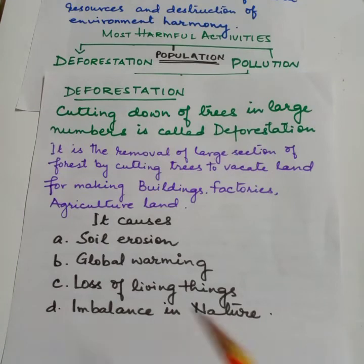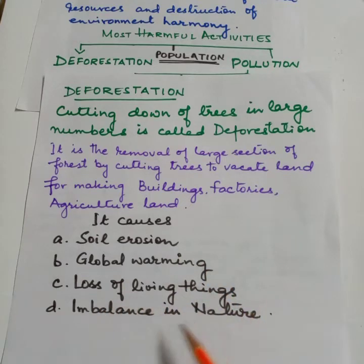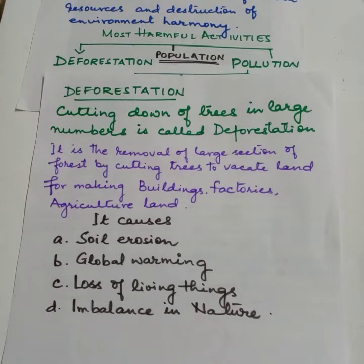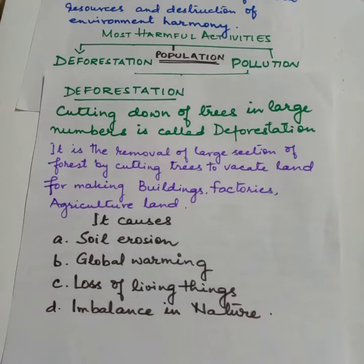Cutting down trees causes soil erosion, global warming, loss of living things, and imbalance in nature. Plant roots hold the soil to the ground; by cutting plants, soil is directly exposed to wind and rain, which removes the topmost fertile layer of the soil. This soil, which contains humus, is washed away, plants will not grow, and so both plants and animals would die and the land will become barren.